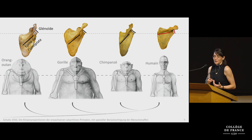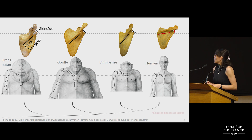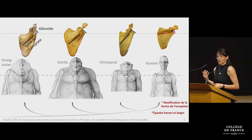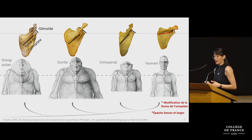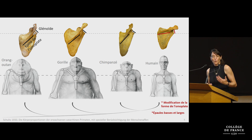In all other apes, the spine of the scapula runs obliquely across the blade and the glenoid is tilted upwards, whereas in humans that spine is transversely oriented and the glenoid faces out to the side. Because humans lack the morphology shared among all the other great apes, we assume that these changes in shoulder height and scapula shape occurred along our branch of the evolutionary tree.